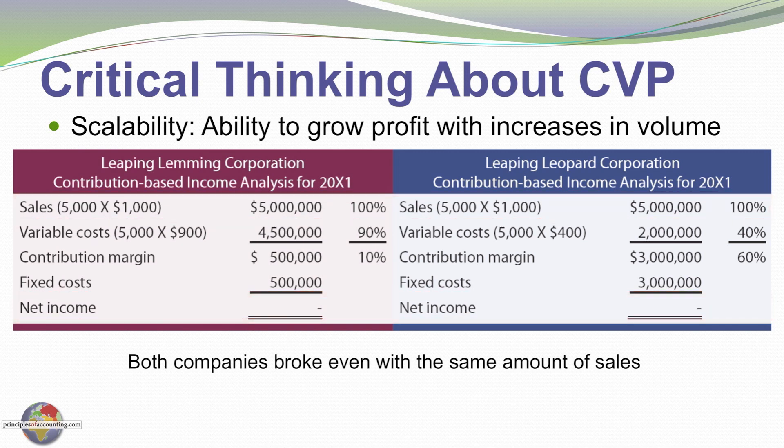If you look closer at Leaping Lemming, you'll notice that its variable costs are ninety percent of sales and they have a very low fixed cost of $500,000, while Leopard has variable costs at $400 per unit or forty percent of sales but a very high fixed cost of three million dollars.